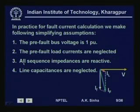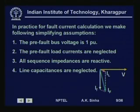Another assumption is that all sequence impedances are reactive. For most power system equipment, reactance is much larger than resistance, so the resistance value is neglected. Also, line capacitances are neglected, because line capacitances draw charging current which is much smaller than even the load current. Therefore, its effect is negligible when fault current flows, and we can neglect line capacitances.